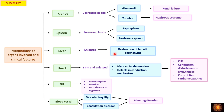When the liver is involved it is enlarged, with deposition in the space of Disse encroaching on hepatocytes and causing destruction of hepatic parenchyma. When the heart is involved there is increased wall thickness; deposition in the subendocardium causes defects in the conduction mechanism and deposition in the myocardium causes myocardial destruction, resulting in congestive heart failure, conduction disturbances, or constrictive cardiomyopathy. GIT involvement can be asymptomatic or cause malabsorption and diarrhea. Blood vessel involvement leads to bleeding due to vascular fragility or, in AL amyloid, factor X inactivation.